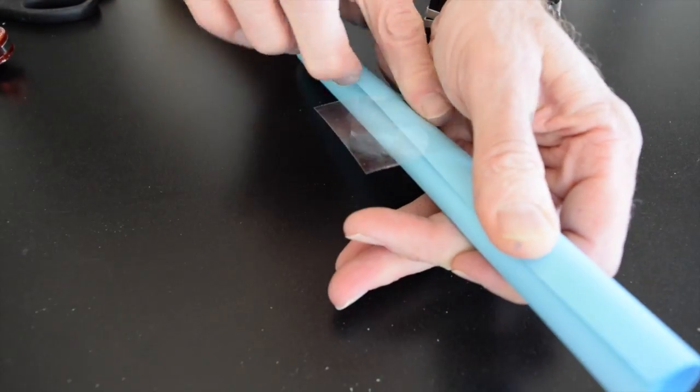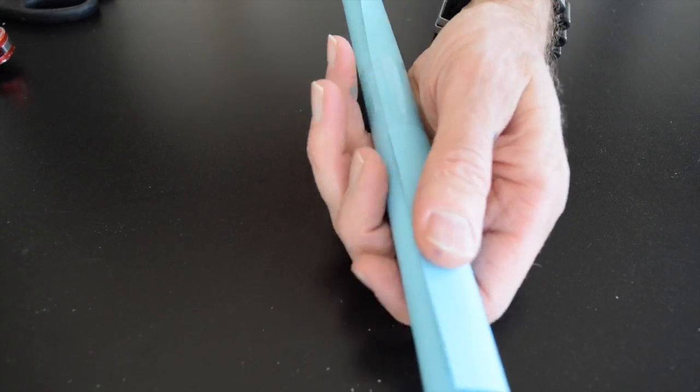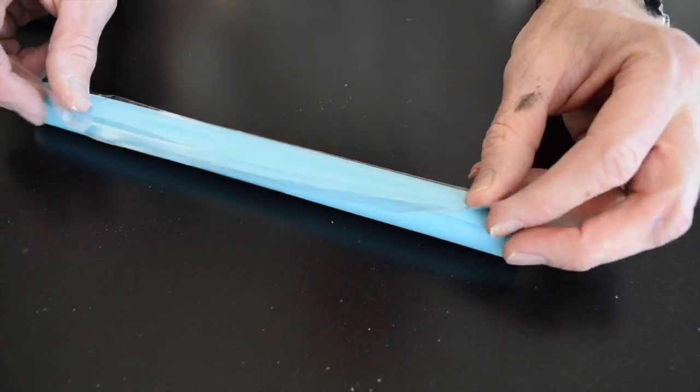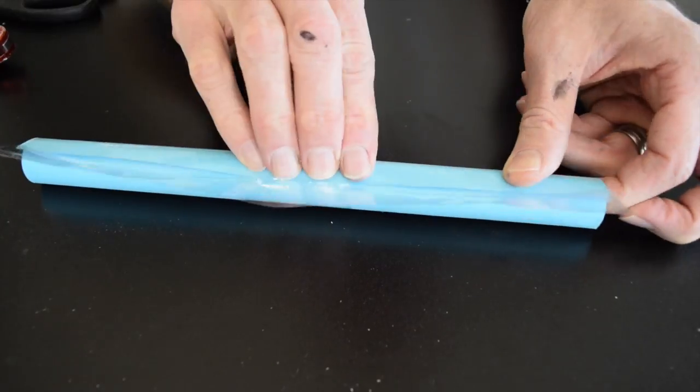Once the paper is rolled around the pipe, I take a piece of packing tape and hold it in place. Then I use a longer piece of tape and cover the whole 11 inch overlap.